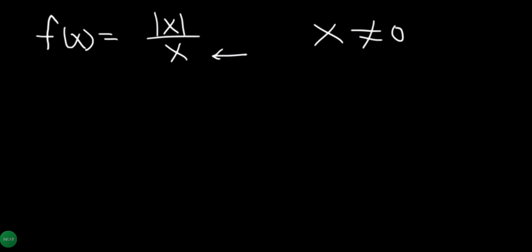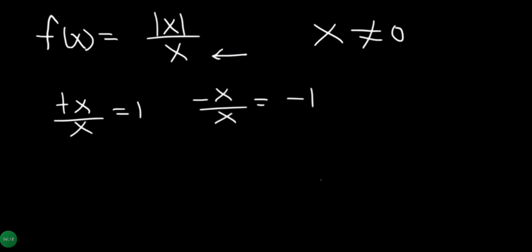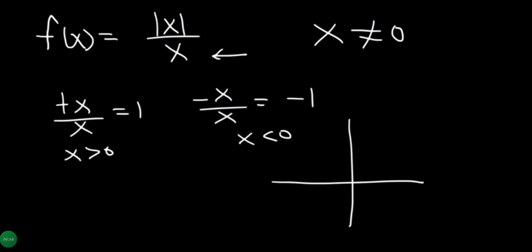The absolute value function: |x|/x equals positive 1 when x is greater than 0, and minus 1 when x is less than 0. So the graph jumps from minus 1 to positive 1 at x equals 0 — this is a jump discontinuity at x equals 0.